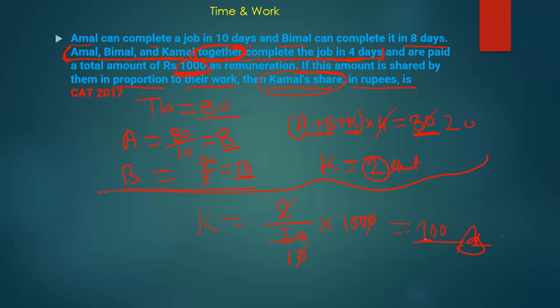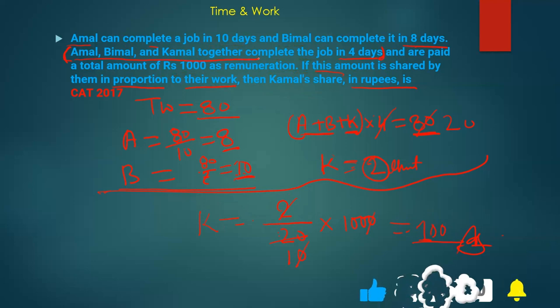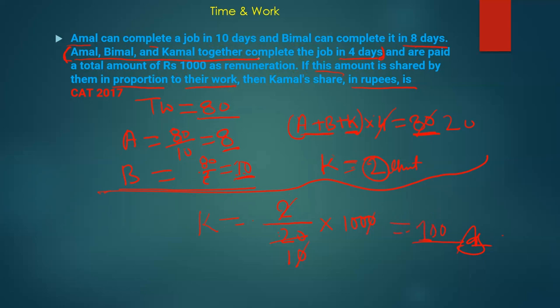Whenever the question says all persons are working together and together completed the work — not that one worked 2 days then stopped — in that condition, we can use the efficiency ratio directly to calculate wages. But if persons worked for different durations, then we must calculate the actual units of work done by each person and use that ratio. I hope this is clear. If it is, please like the video.